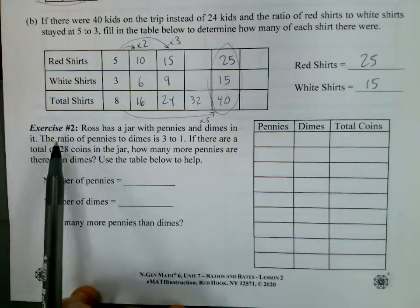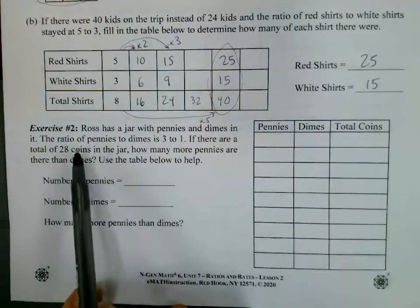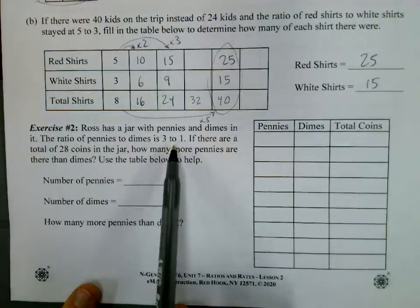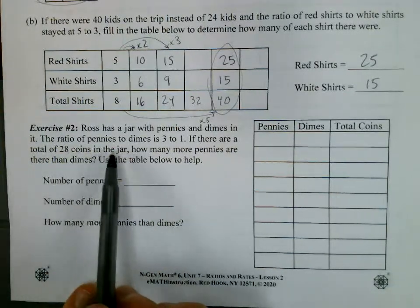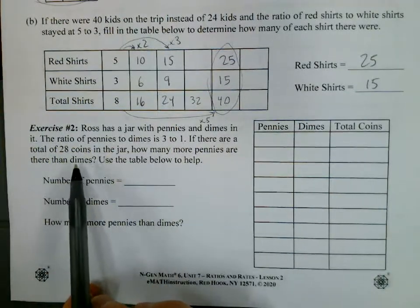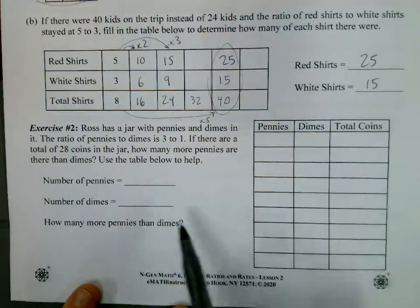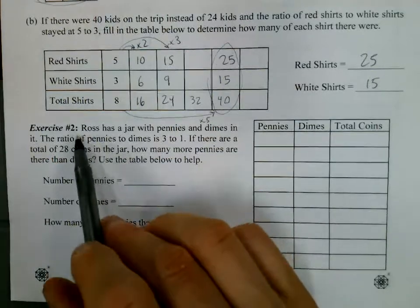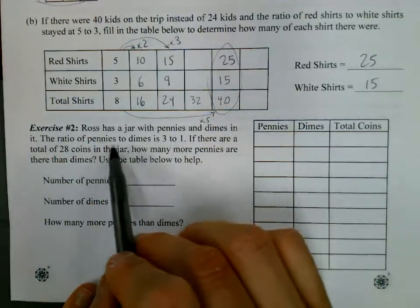Okay, let's look at exercise two together. Ross has a jar with pennies and dimes in it. The ratio of pennies to dimes is three to one. If there are a total of 28 coins in the jar, how many more pennies are there than dimes? Use the table below to help. So the first thing I'm going to do is go back and just carefully analyze what the information that I'm given.